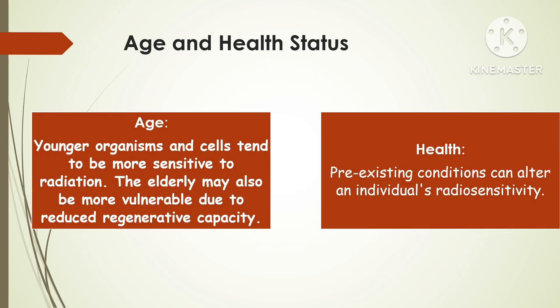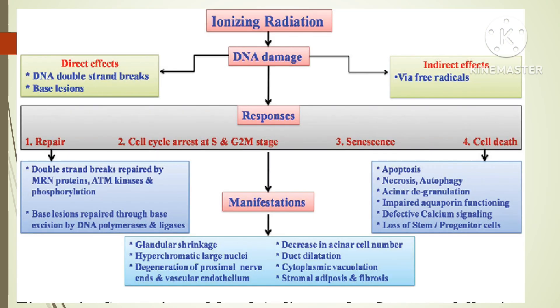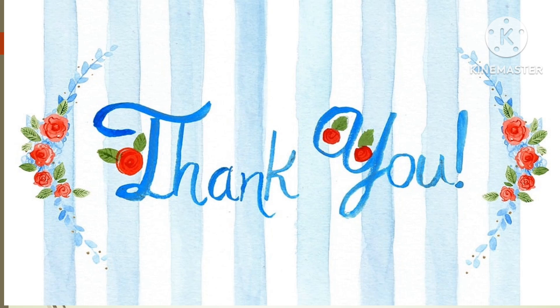Regarding age and health status, younger individuals and their cells tend to be more sensitive to radiations. The elderly may also be vulnerable because their bodies have reduced regenerative capacity, and pre-existing conditions can alter the cell response to radiations. A final chart summarizes the total mechanism of action of radiations on the human body. That concludes the biological effects of radiation on the human body.